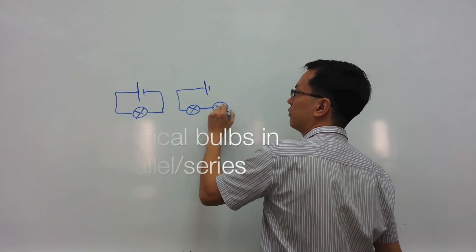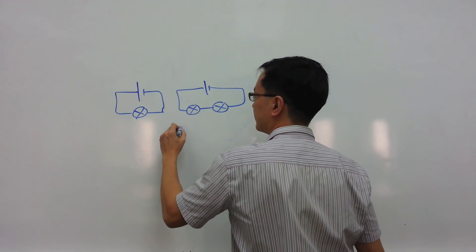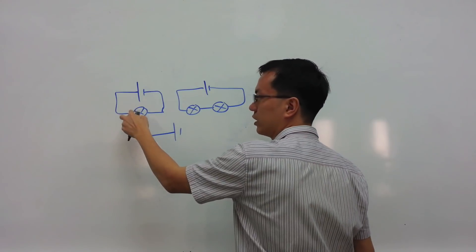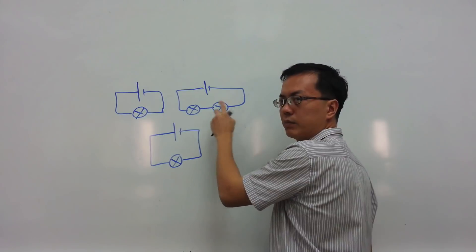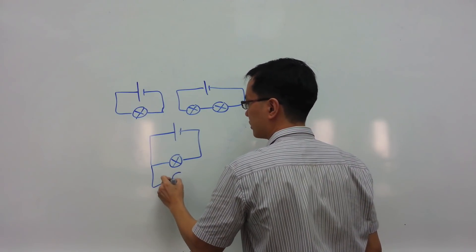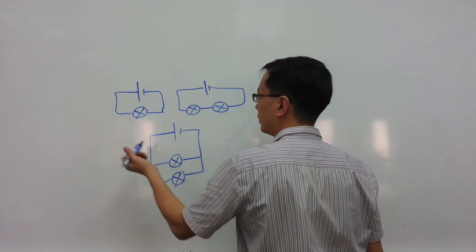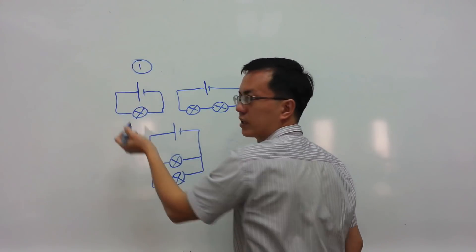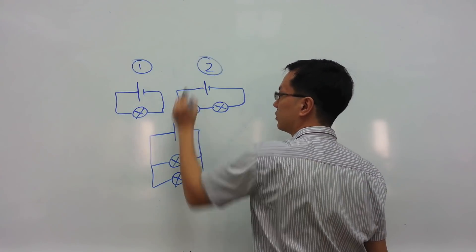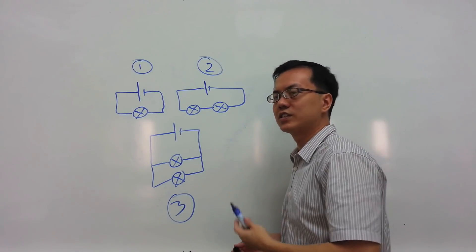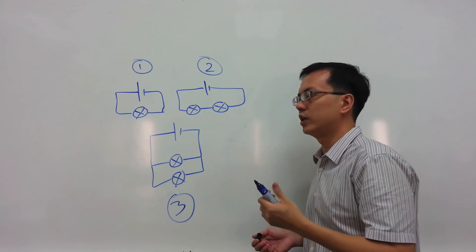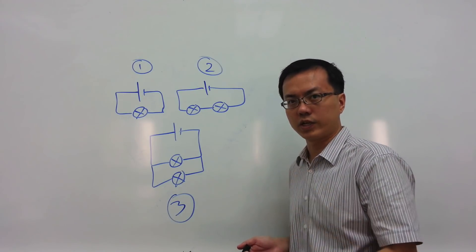Assuming that we have the same light bulb arranged in three different patterns, the first being a single light bulb, the second is a pair of light bulbs in series, and the third is a pair of light bulbs in parallel. Let's call this circuit diagram 1, this is circuit diagram 2, and this is circuit diagram 3. In which of these circuit diagrams will a light bulb burn brightest?